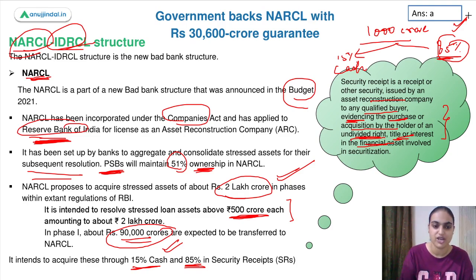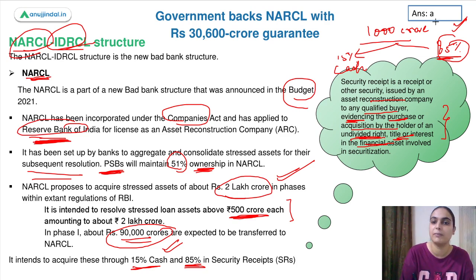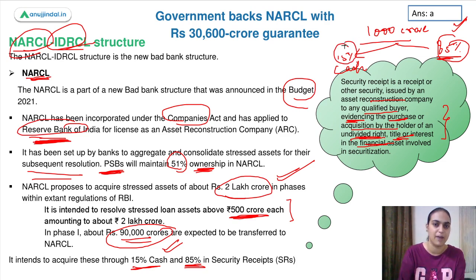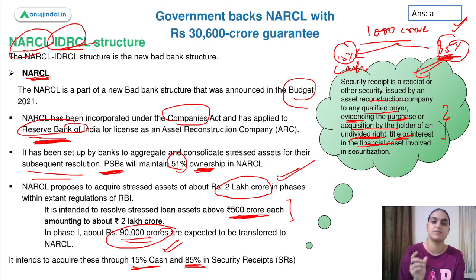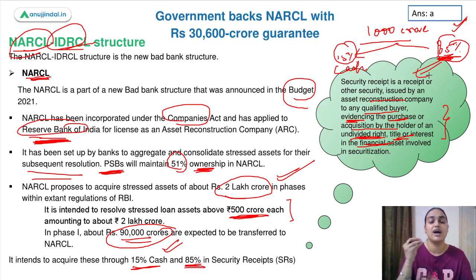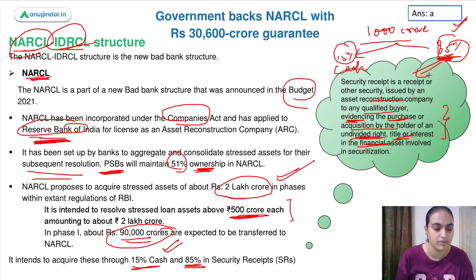To summarize: 15% of the 1,000 crores will be paid in cash to the bank for buying these bad loans. For the remaining 85%, NARCL will issue a security receipt — basically a receipt saying we will pay you in future — evidencing that you are the holder of that very amount.